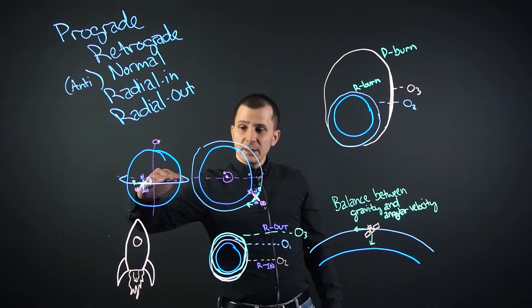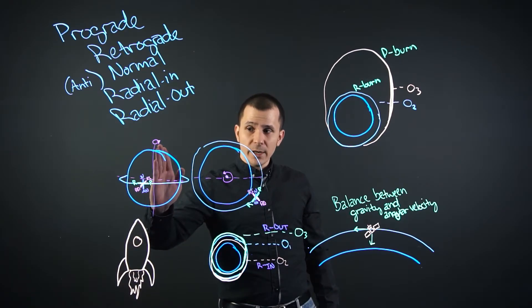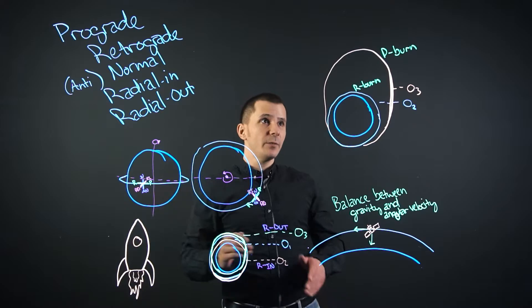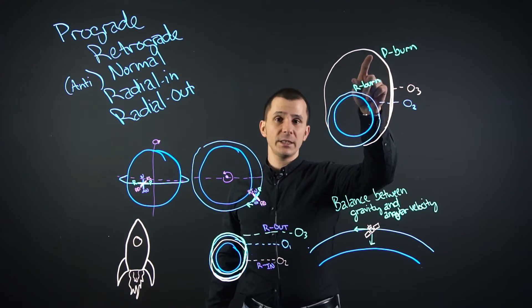With normal and anti-normal, this is about your orbital inclination. So if you were to burn in the normal direction, you would increase your direction, but you also have to be careful to account for a prograde increased apoapsis.